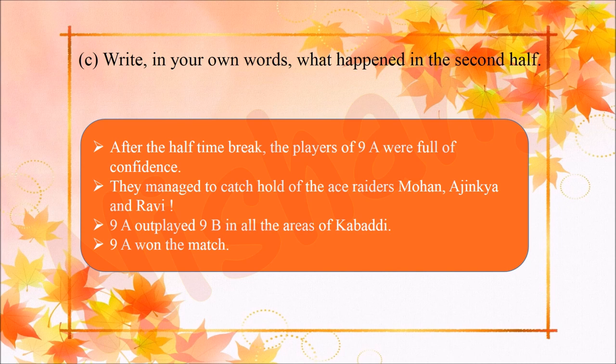Point C: What happened in the second half. After the half-time break, the players of 9A were full of confidence. They managed to catch hold of the ace raiders Mohan, Ajinkya, and Ravi from 9B. 9A outplayed 9B in all areas of Kabaddi and won the match.